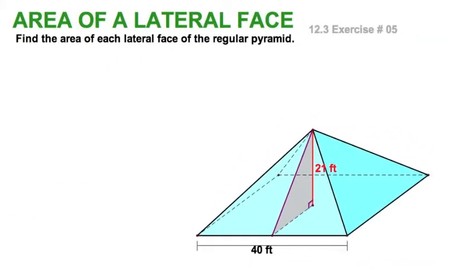Here we'll stop once we find the area of just one of the four triangular faces on this regular square pyramid, exercise number five. Clearly we're given a 21 here, and that's the height of the pyramid, though we need the slant height.